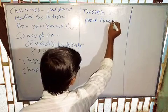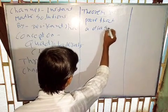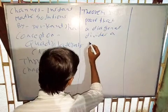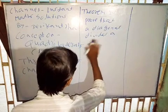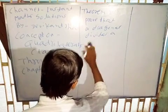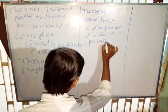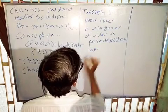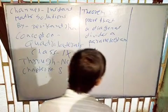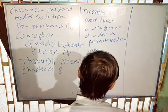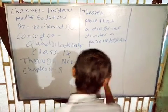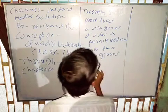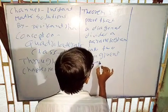Prove that: a diagonal divides the parallelogram into two congruent triangles.